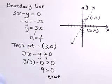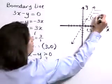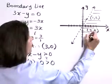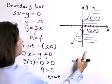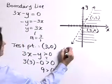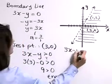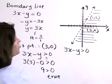So our point (3,0) satisfies the inequality. Therefore, we know as well that each of these points to the right and below that line satisfy the inequality. So here we see the graph of the inequality, 3x minus y is greater than zero.